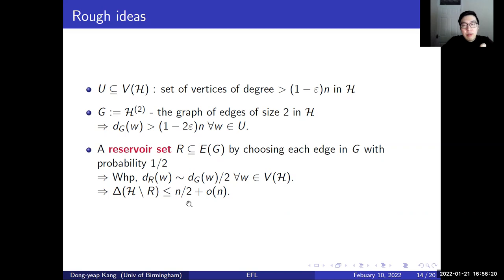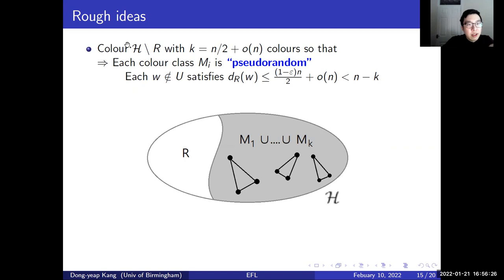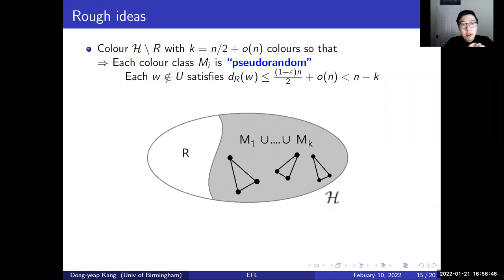Because H minus R has maximum degree roughly n/2, we can color this resulting sub-hypergraph with k colors, where k is roughly n/2, in a way that each color class Mᵢ is pseudorandom.